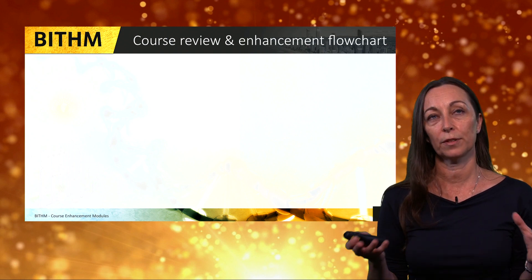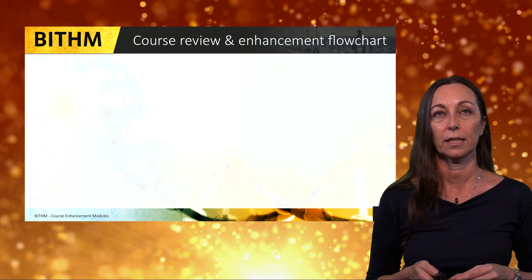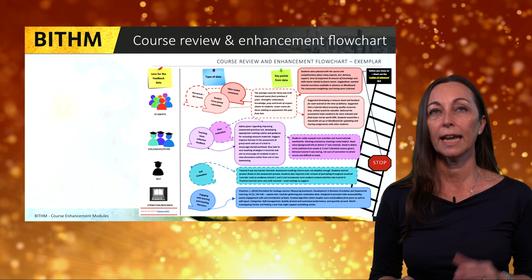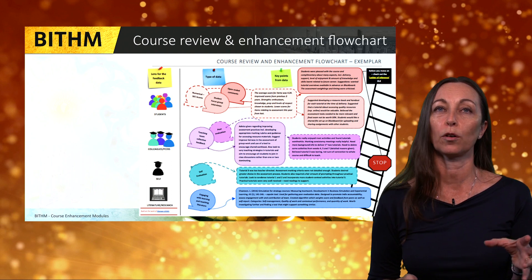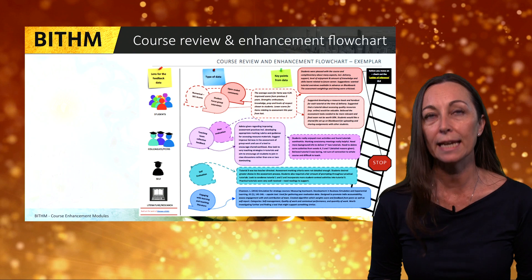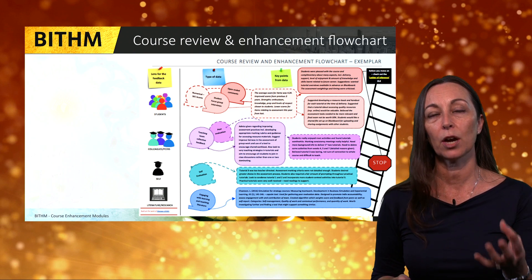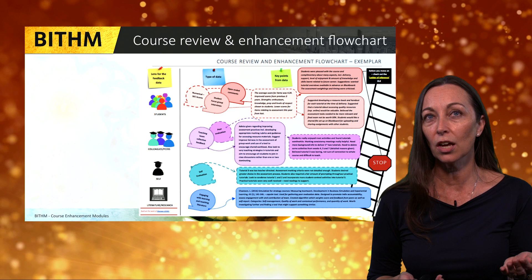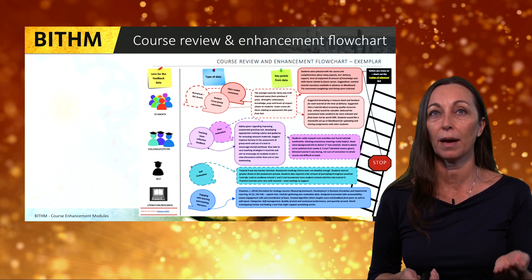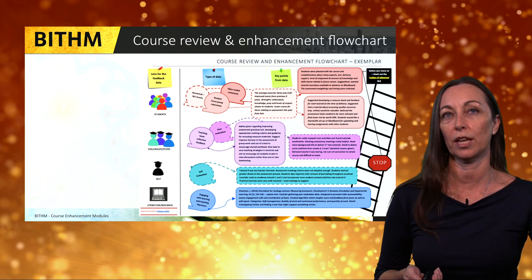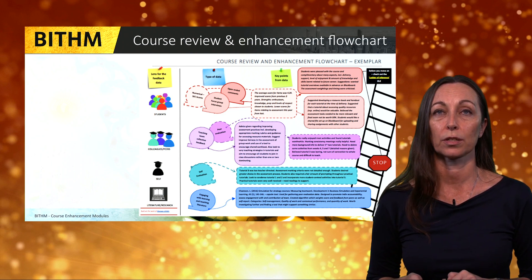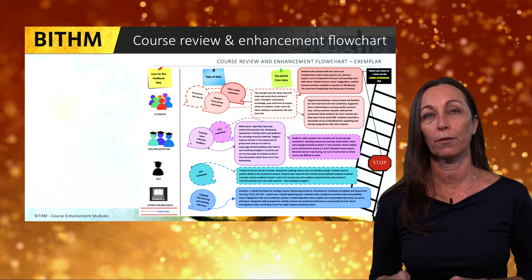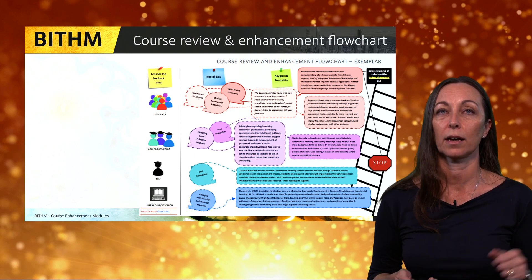Within the module we give you a template to start framing up some ideas around your course review. It's presented as a course review and enhancement flowchart, and it takes you through considering the various elements of your course evaluation data — what does it all mean? What are the assumptions you're making? This may involve going back to the last module where you looked at the ladder of inference, because your assumptions underlying your interpretations of data really have an impact on what conclusions you're drawing and what actions you take. The flowchart also gets you to consider what recommendations you would make for redesigning your course.